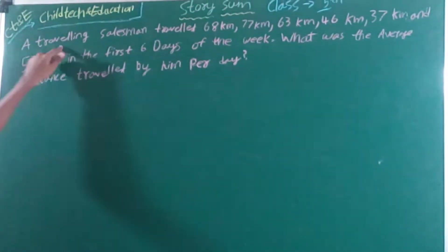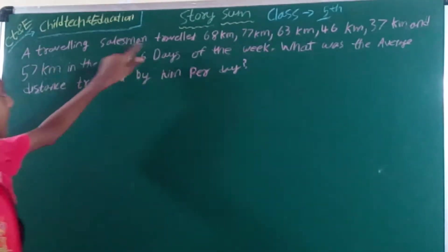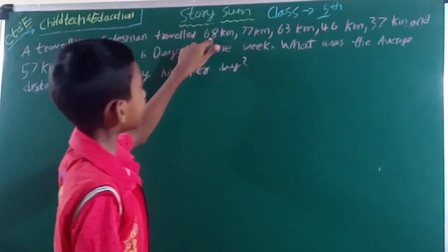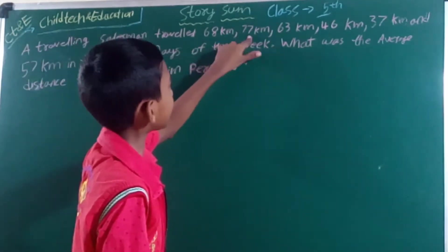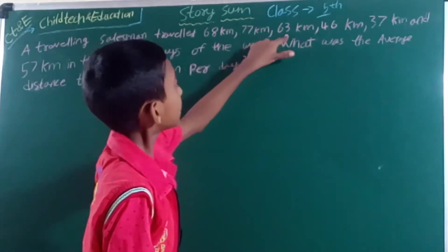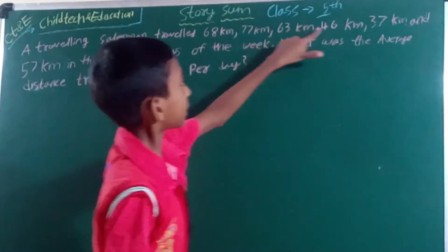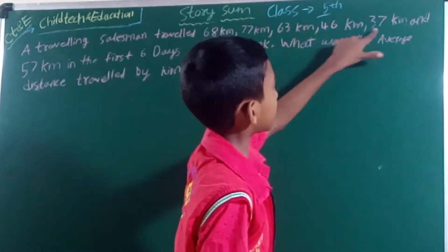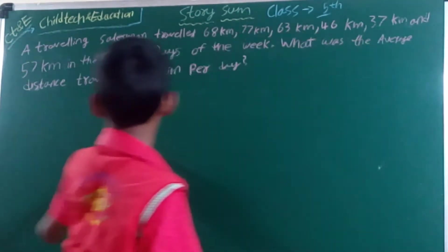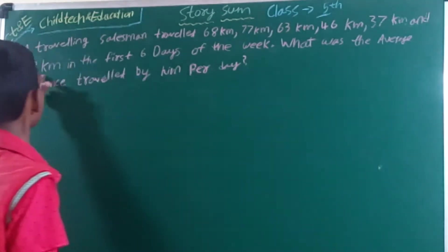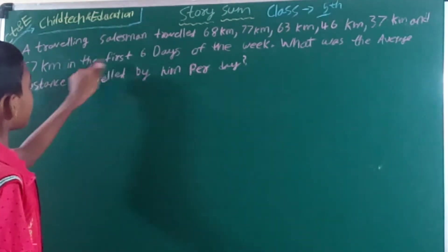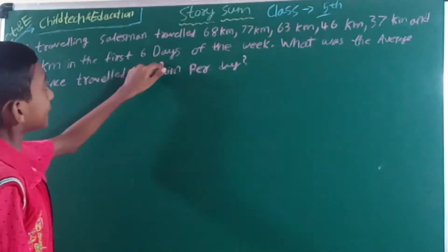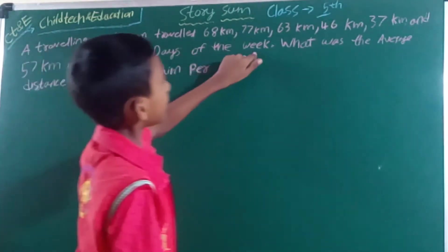The question is: a travelling salesman travelled 68 km, 77 km, 63 km, 46 km, 37 km, and 57 km in the first 6 days of the week.